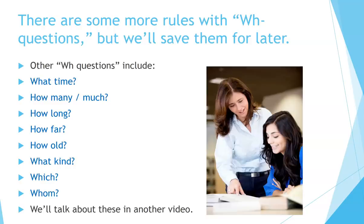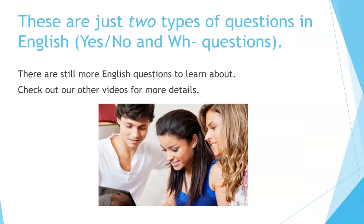There are some more rules with WH questions, but we'll save them for later. Other WH questions include: What time? How many? How much? How long? How far? How old? What kind? Which? Whom? We'll talk about these in another video. These are just two types of questions in English — yes/no questions and WH questions. There are still more English questions to learn about. Check out our other videos for more details.